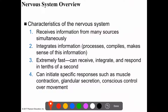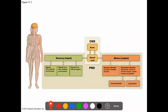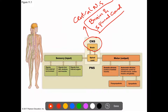To understand the parts of the nervous system, let's look at this image. We have two major parts or compartments: the CNS, which refers to the central nervous system — mainly the brain and the spinal cord. These two parts communicate with each other.